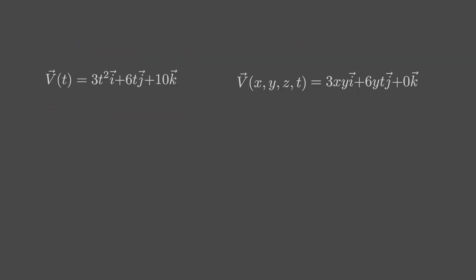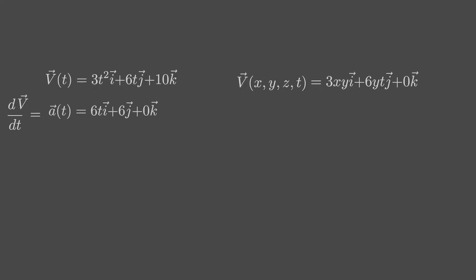For example, take a look at this velocity field. It is a function of time only, so it is in Lagrangian form. But what about this velocity field? It is in Eulerian form — a function of both space and time. How can you get its acceleration?